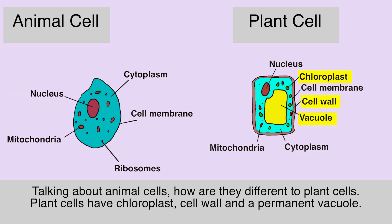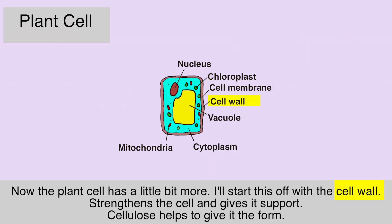Talking about animal cells — how are they different to plant cells? Plant cells have chloroplasts, a cell wall, and a permanent vacuole.